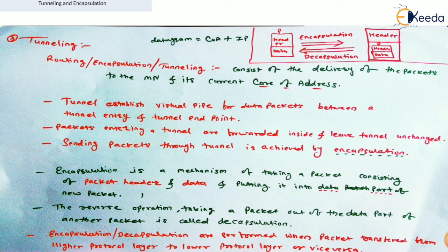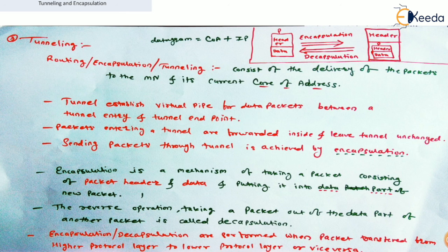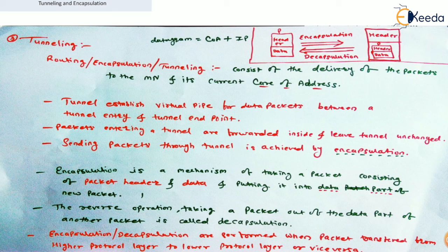Tunneling does not establish a physical medium between the foreign agent and home agent. Tunneling simply performs encapsulation over the original packets. The new packet, in which the original packet is embedded, carries the care-of address. This packet reaches the foreign agent, where decapsulation is performed and the original packet is transferred to the mobile node. This is the mechanism of tunneling, and it is the last phase of Mobile IP.